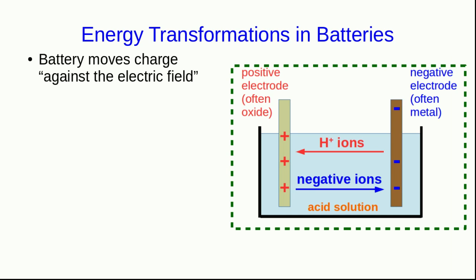If we think about the whole battery as our system, then the battery is moving charge against the electric field. So this charge, which is in the system, is gaining electric potential energy. At the same time, the chemical reactions are consuming reactants. So the battery is converting chemical energy into electric potential energy.